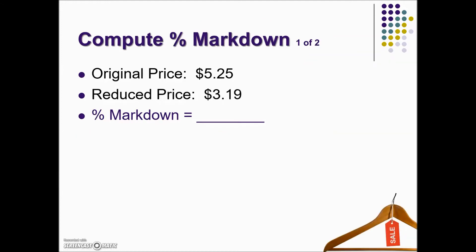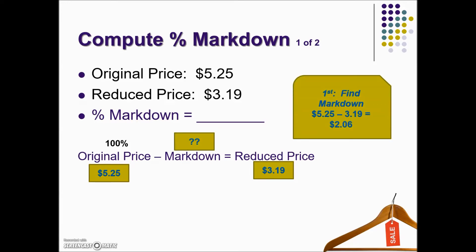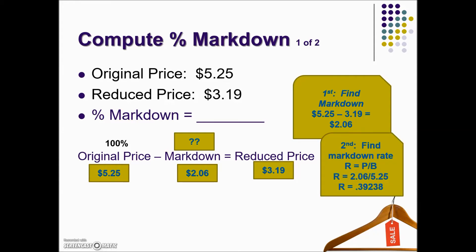In the next problem, we're given the original price and the reduced price. Again, the original price is the base. Filling in that information, we can determine how much the markdown was, and once we have the markdown, we can determine the percentage it represents. The difference between the original price and the reduced price gives a markdown amount of $2.06. We now have a part; we're looking for a rate and have the base. To solve for rate, we take the markdown amount of $2.06 divided by the base $5.25, giving us 39.2% markdown.